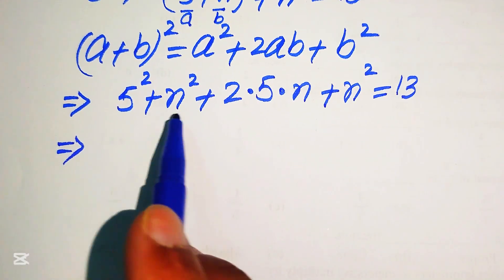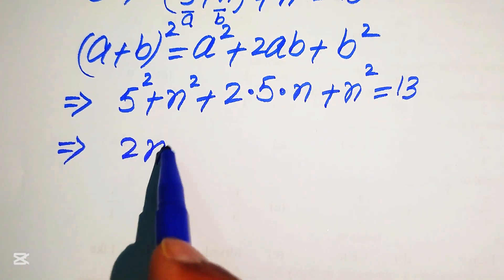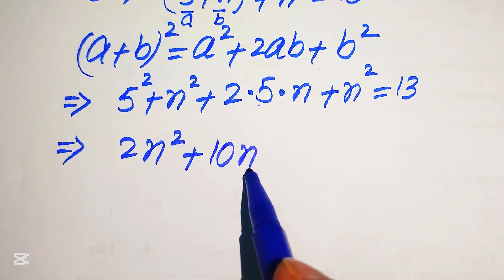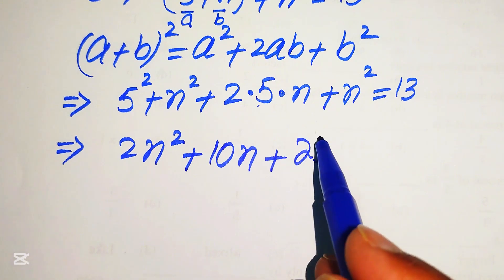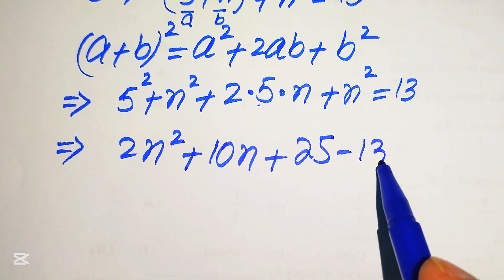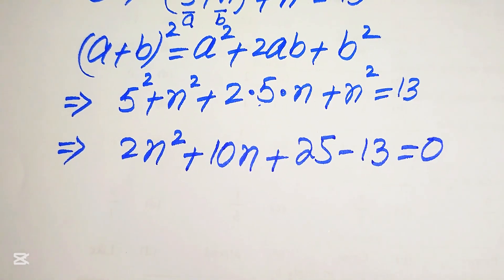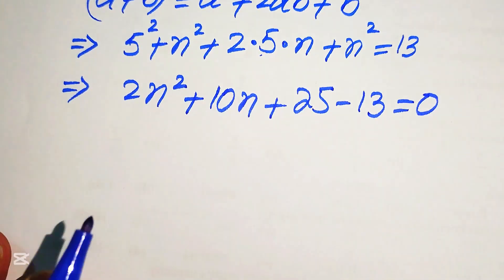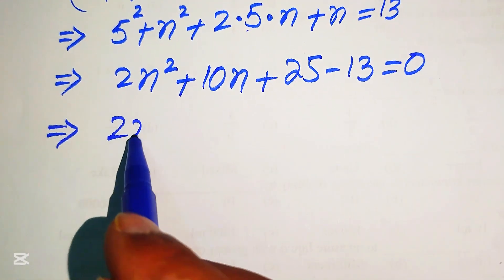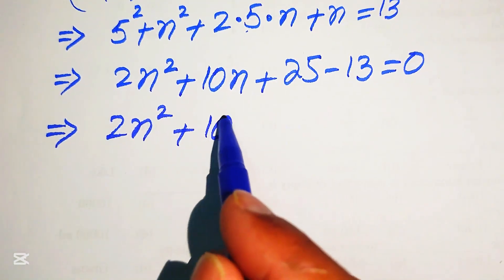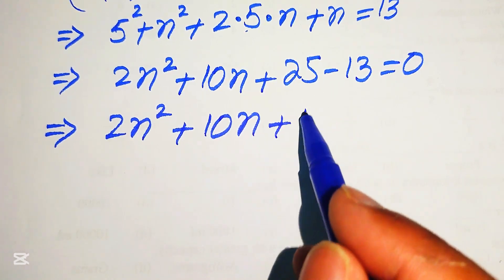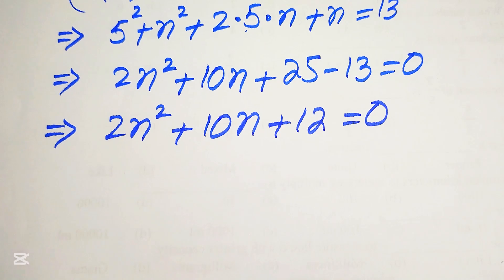Now we simplify: n² + n² becomes 2n², 2 × 5 gives 10n, and 5² = 25. Moving 13 to the left-hand side gives 2n² + 10n + 25 - 13 = 0. Combining like terms, 25 - 13 = 12, so we have 2n² + 10n + 12 = 0.